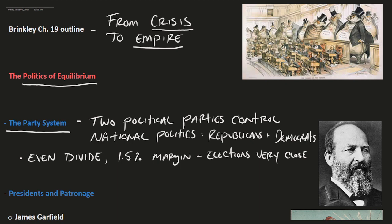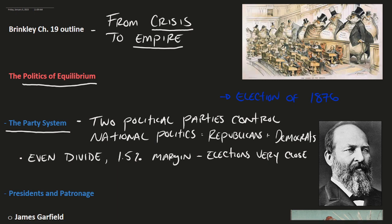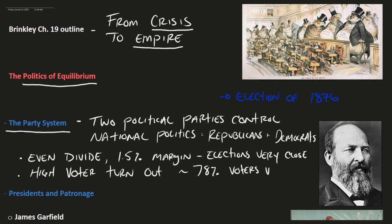We can think back to how Reconstruction ended with the election of 1876. Because that election was so close and there were disputed votes, Reconstruction came to a conclusion. The second thing about Gilded Age politics is that there was an especially high voter turnout — far higher than most periods in American history. Approximately 78% of eligible voters voted, which is a very high number.